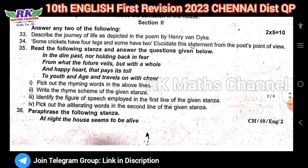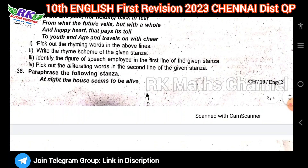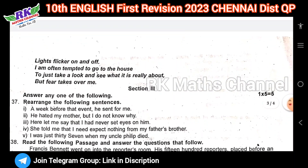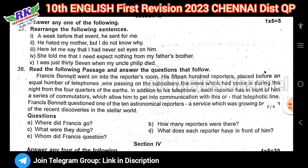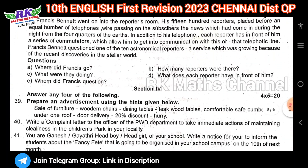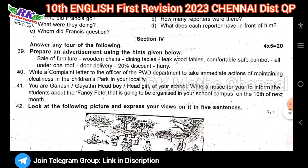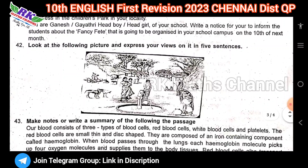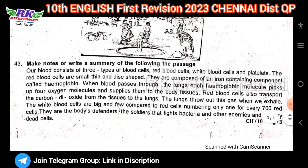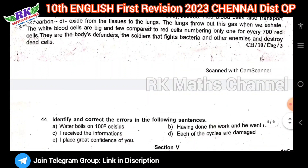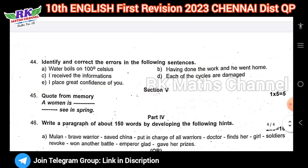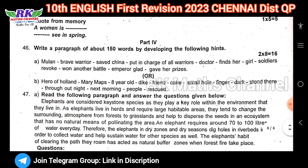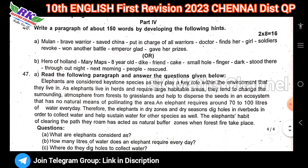Next two marks, then poetry. Part 3 includes supplementary and section 4. Grammar section: any six, any four — advertisement, letter writing, notice board, picture description, passage, summary, identify the errors. Question section 5 is the memory poem. And eight marks — the next part has two questions.